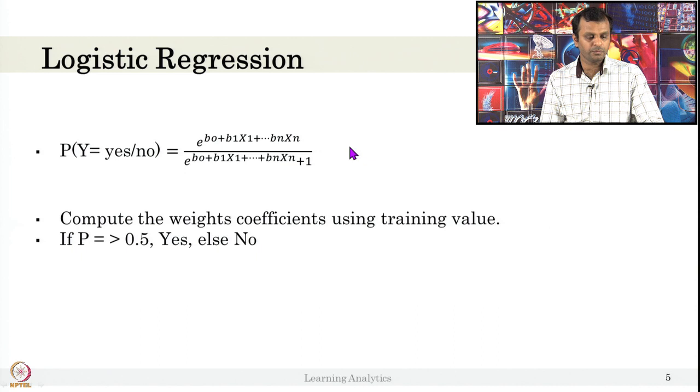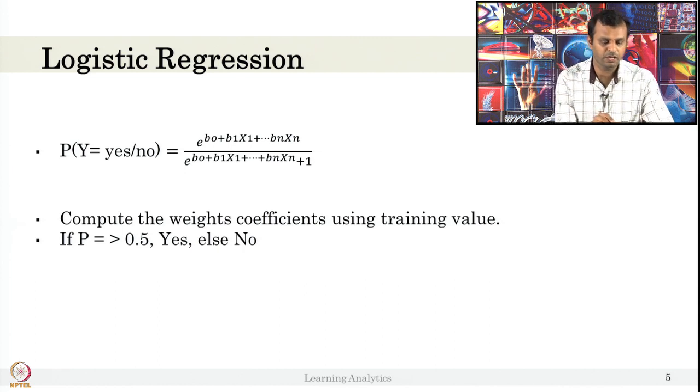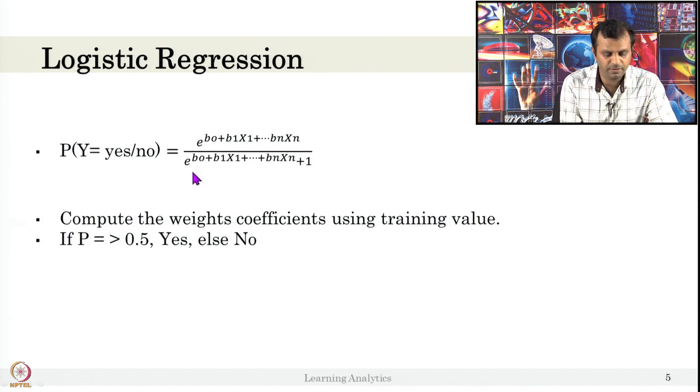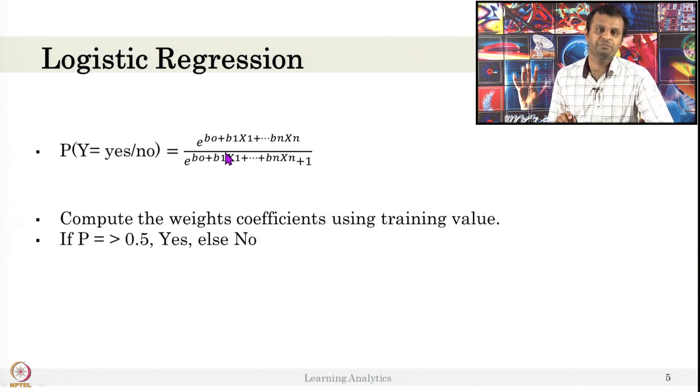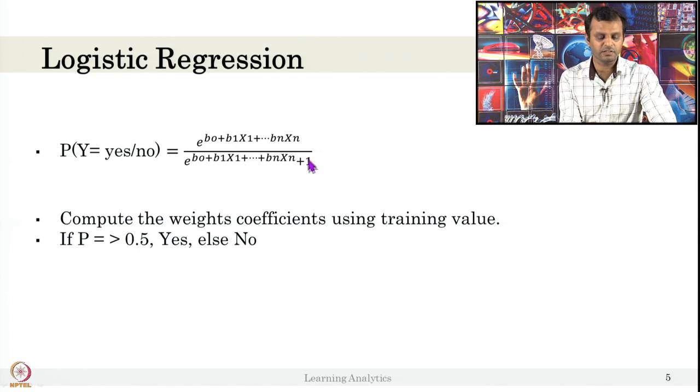If I want to put that in regression, probability of Y being yes or no, or probability of Y being pass or fail, can be given as e power t divided by 1 plus e power t. The t value is exactly what we computed in a regression formula. You see regression like Y equals mx plus c, right? The b1, b2, bn are weights, x1 is the independent variable, and b0 is the intercept. Given data, the model tries to fit this particular equation.